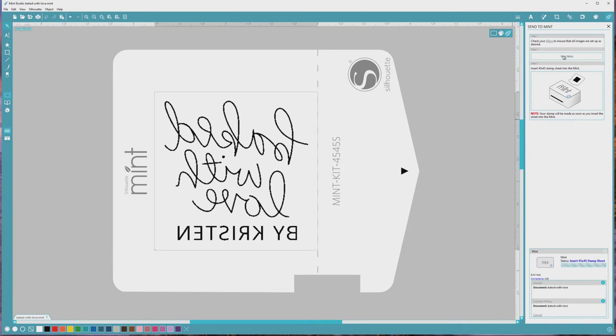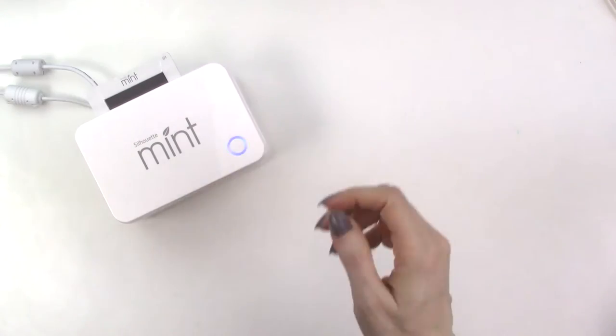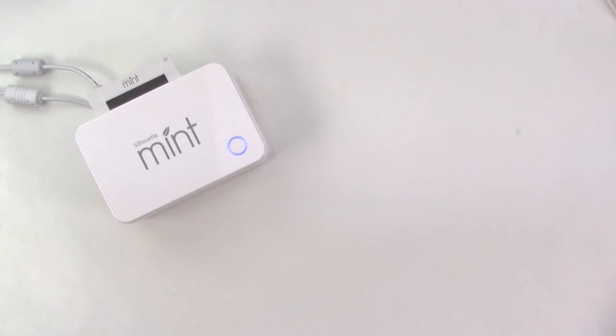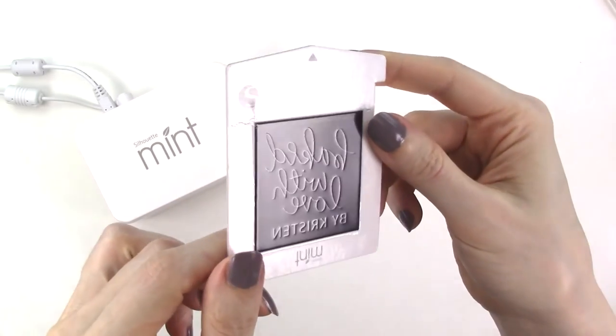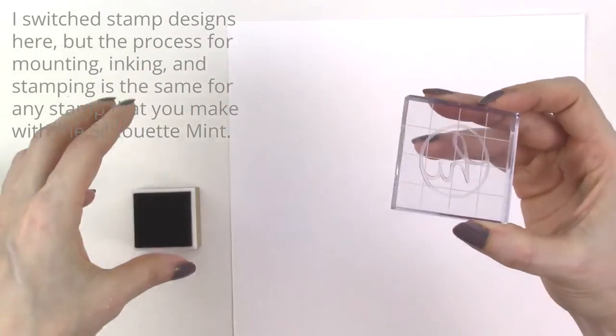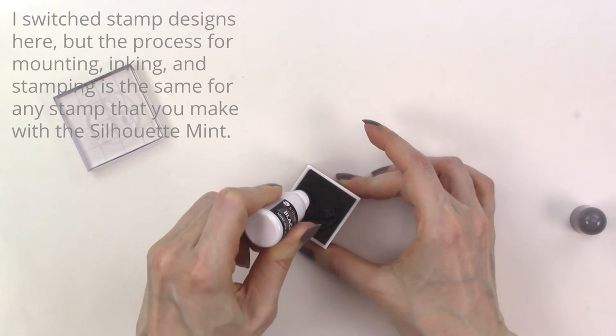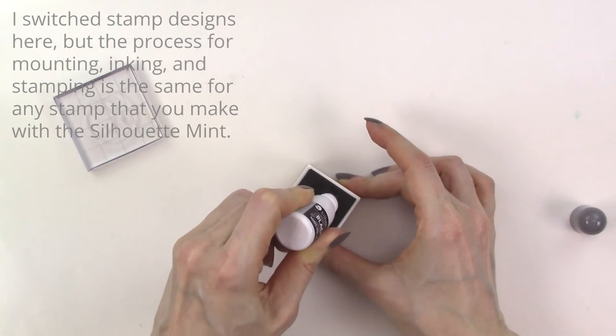After you design your stamp in Mint Studio you'll send it to the mint and insert the correct size stamp sheet into the mint machine. The stamp will be created through a thermal printing process and the design will be slightly raised from the surface of the stamp sheet. After the stamp has printed and is mounted on a stamp block you attach it to a wood stamp base and ink it up with ink that's specially formulated for mint stamps.